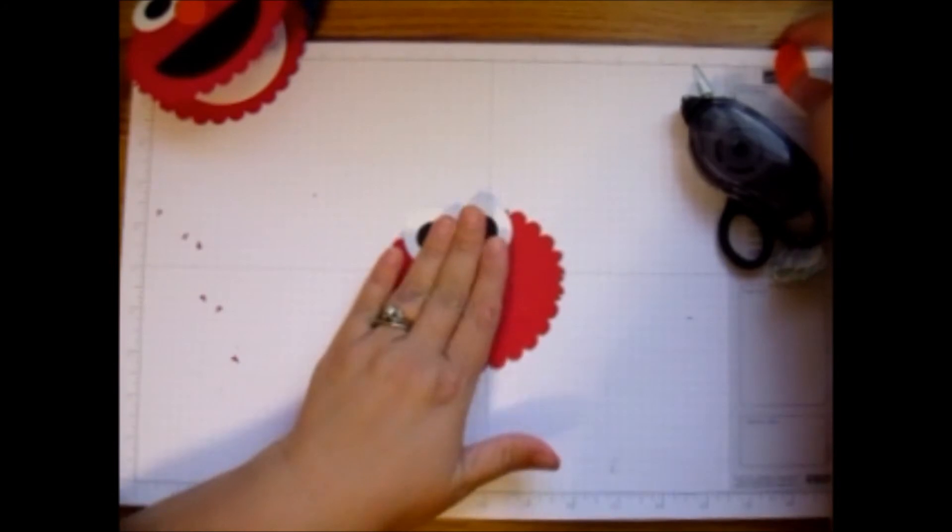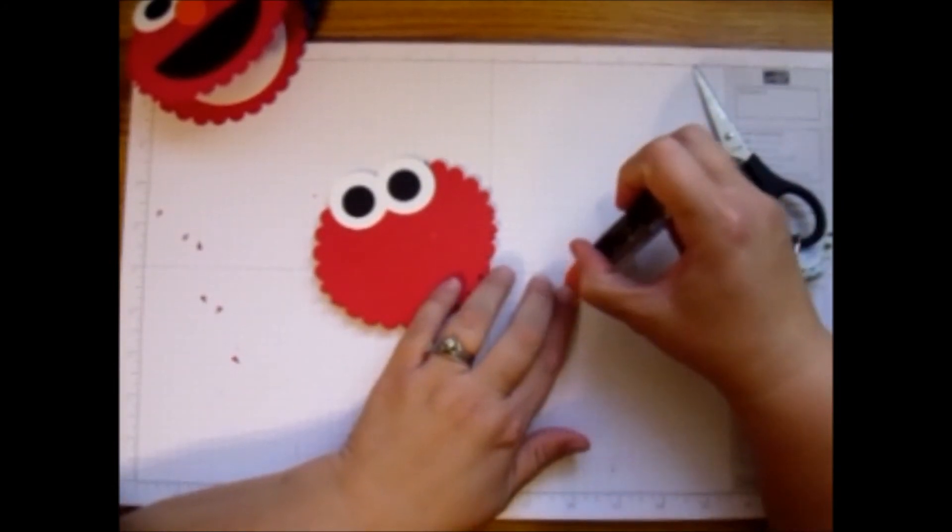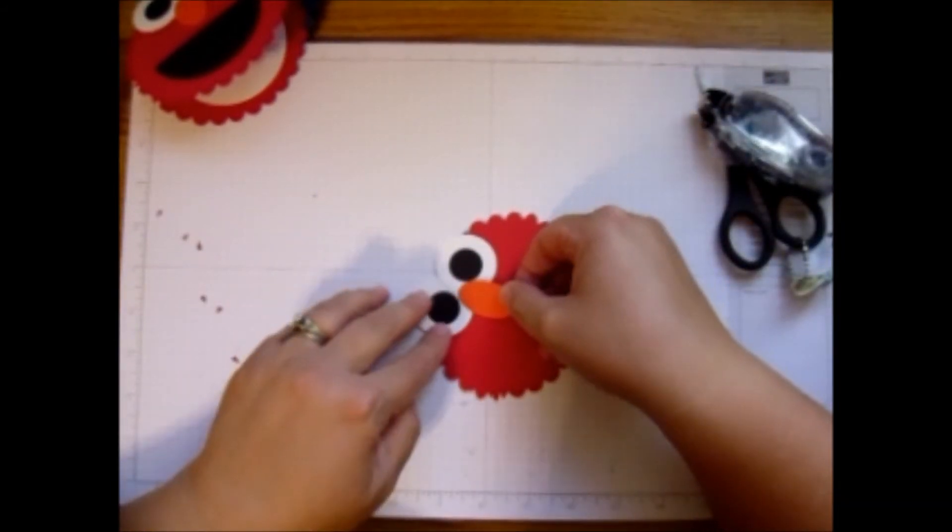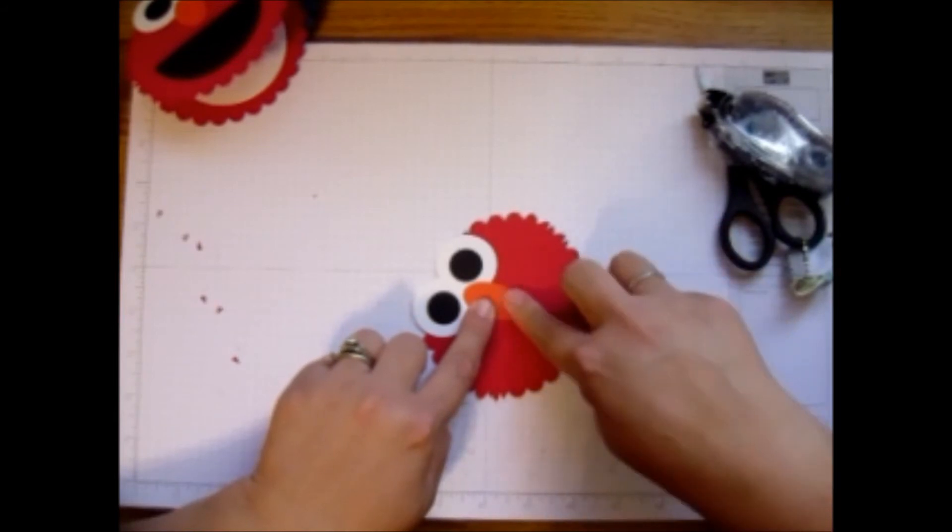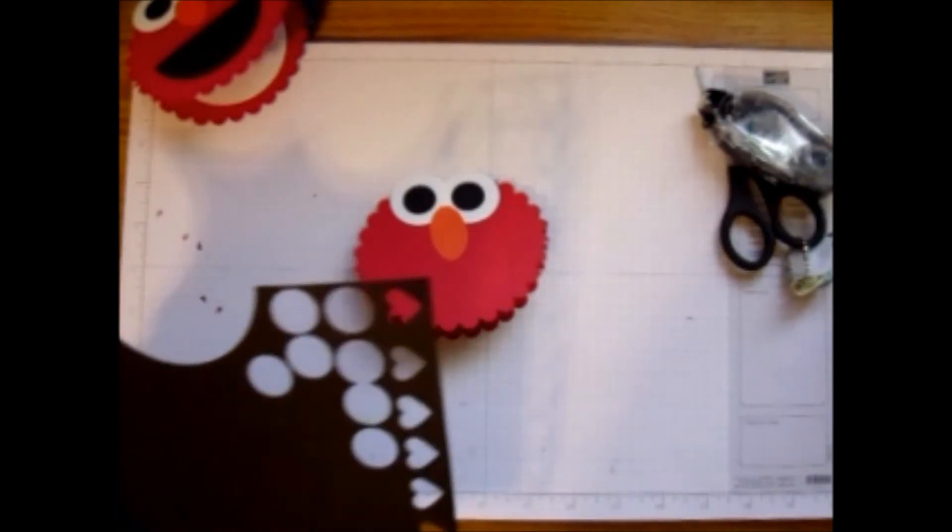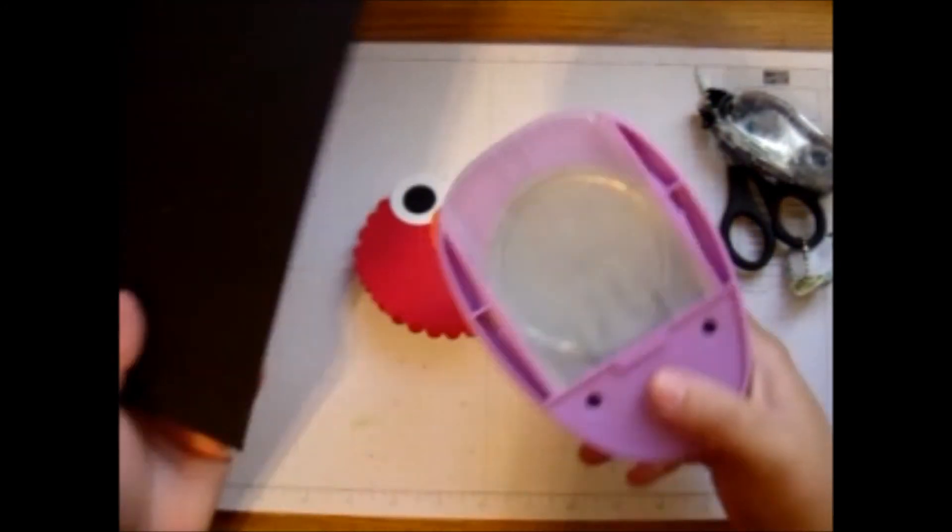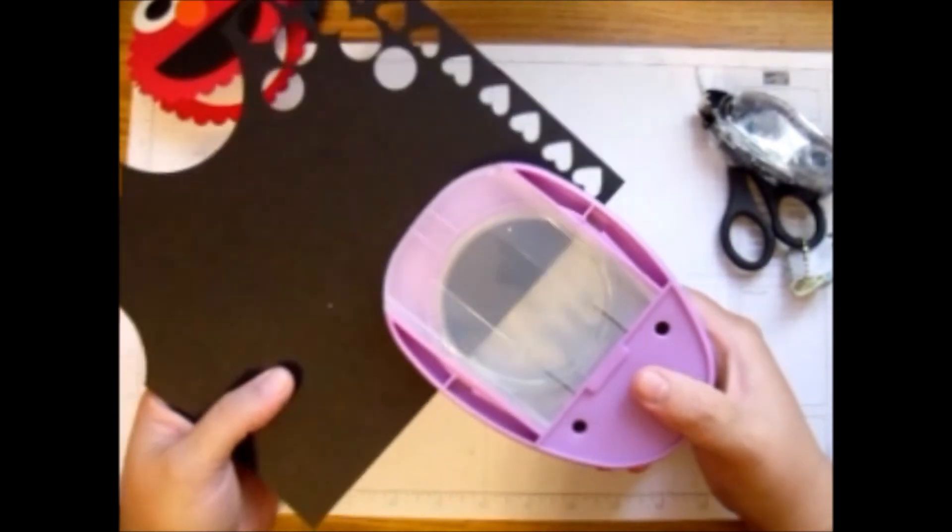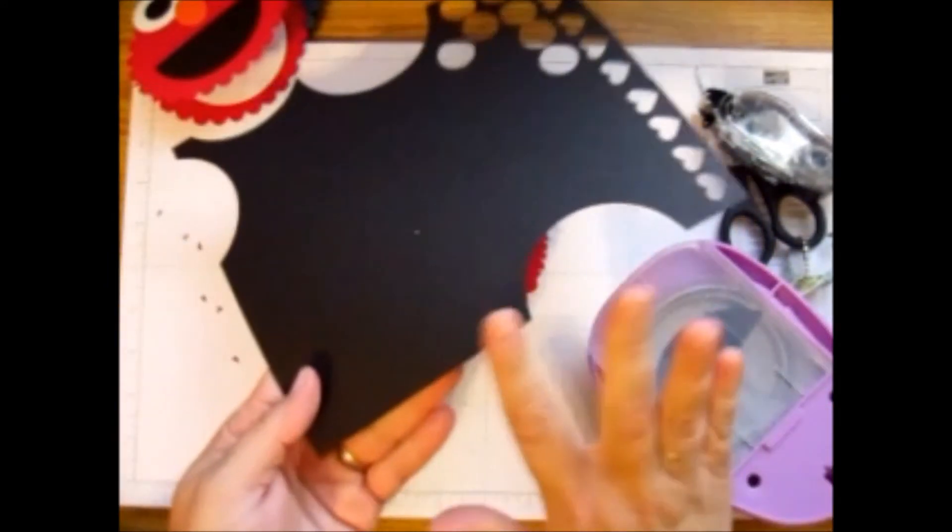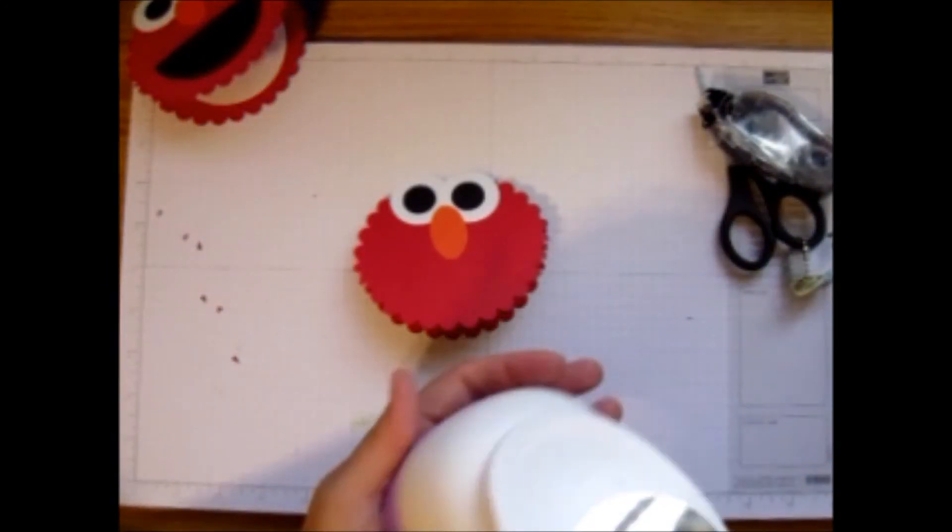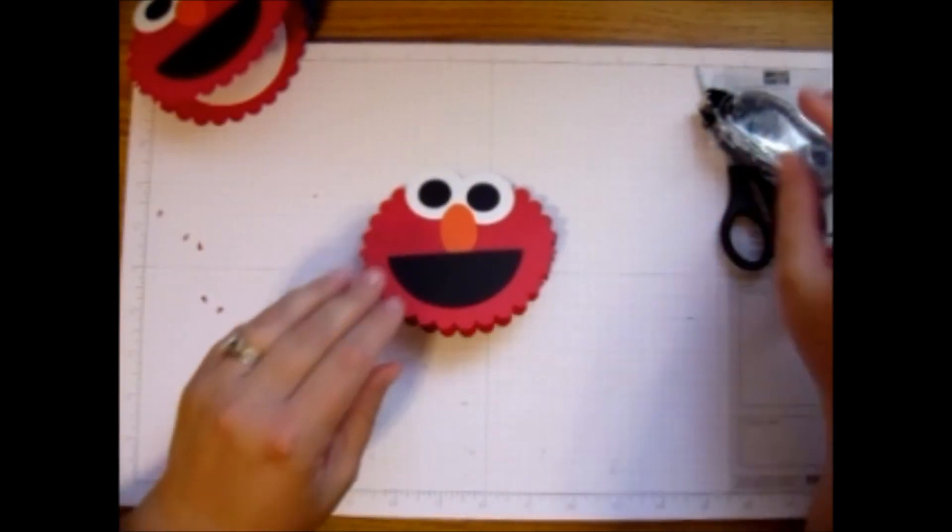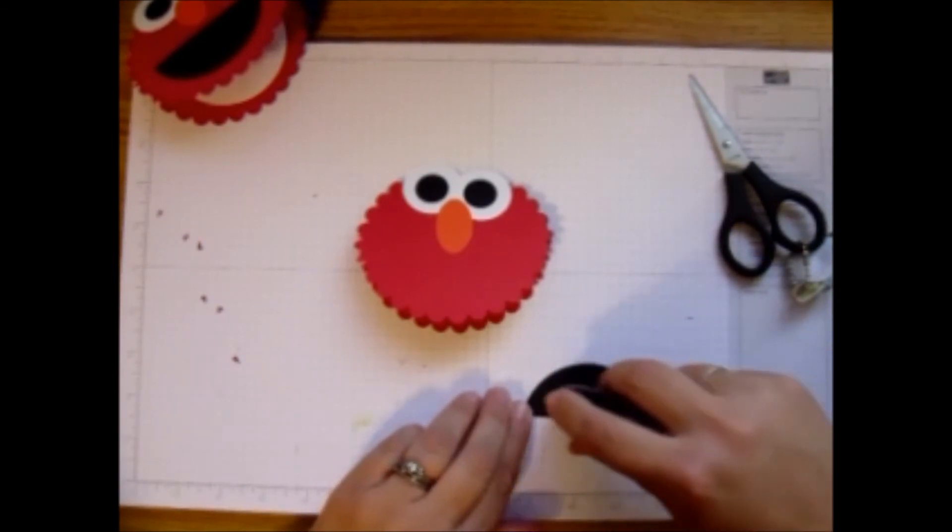And then we're going to come in with the nose. And the nose goes over the eyes, just a tad there. Okay. Now we need to make the mouth and the mouth is very easy. You just take your 3/4 inch circle punch and punch it out on the square, on the flat line there. And once you take that out you have the mouth. That's it. So go ahead and snail adhesive that down.